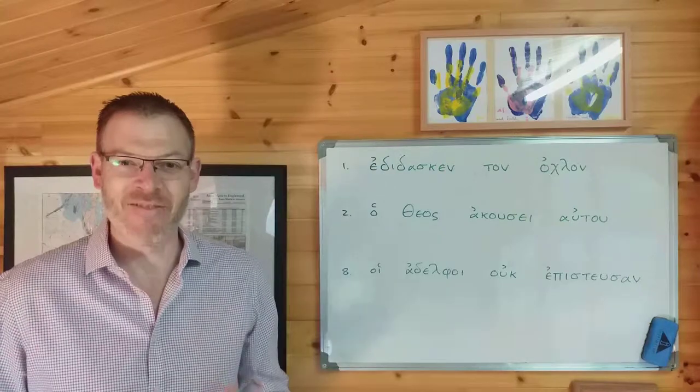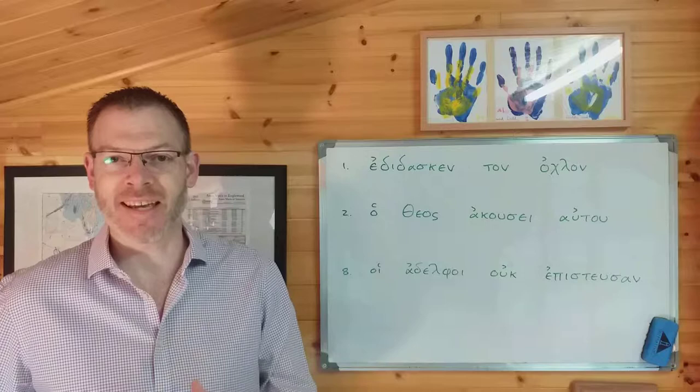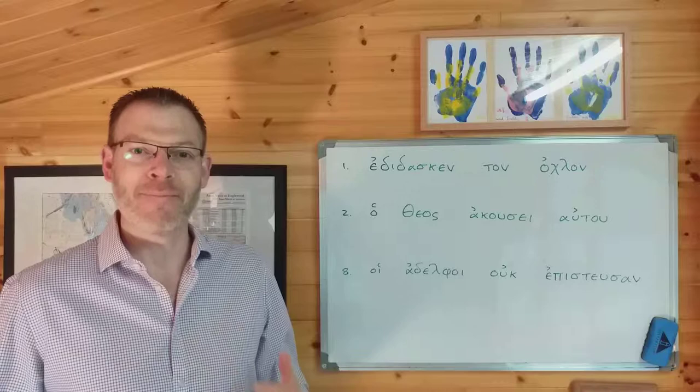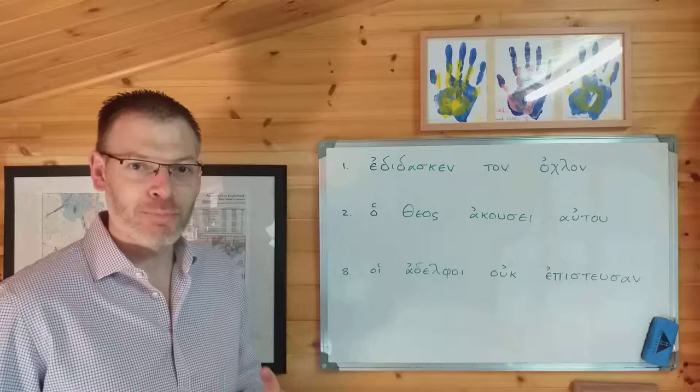Hi everybody, welcome back. We're looking today at Jeremy Duff's Elements of New Testament Greek. We're in chapter 6, at the halfway practice on the tenses, where we've introduced the future, imperfect, and aorist tenses. We're now going to look at some of these practice exercises to help you get to grips with what these different tenses mean in practice and how to use them.